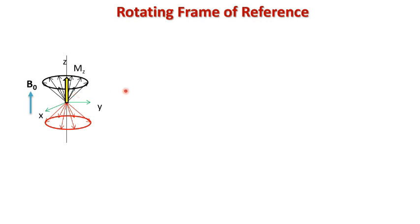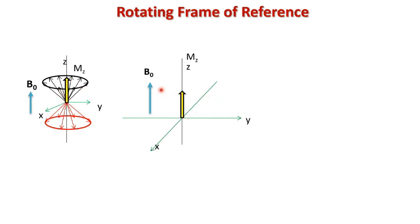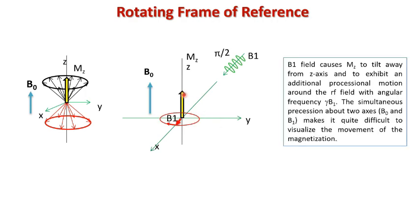Now onwards we will represent this picture in this manner. Here this is the net magnetization of the collection of spins placed in the applied external magnetic field. This magnetization vector precesses about the z-axis. When an external oscillating magnetic field is applied perpendicular to the B0 field — either in the x-axis direction or the y-axis direction — this net magnetization vector starts precessing about this B1 field also. So the simultaneous precessions about two axes makes the system very complicated to visualize.